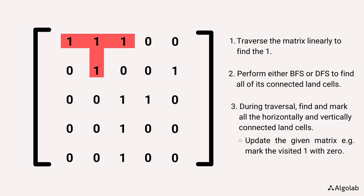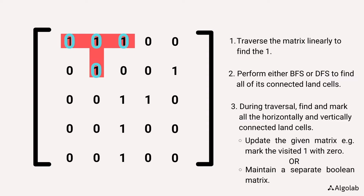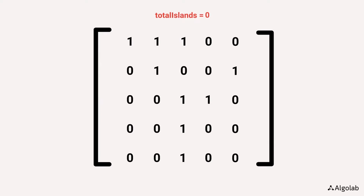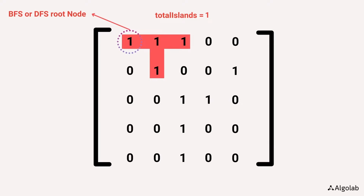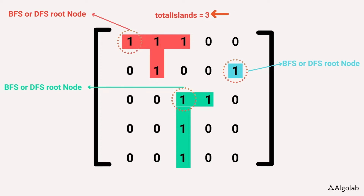We need a mechanism to mark each land cell to ensure it is visited only once. We have two options: update the given input matrix by converting each visited 1 to 0, or use a separate boolean matrix to record visited cells. We will mark each visited 1 with 0. Every time DFS is triggered, we are sure we have found an island, so we keep a running count to calculate the total number of islands.